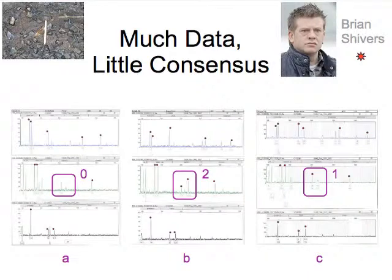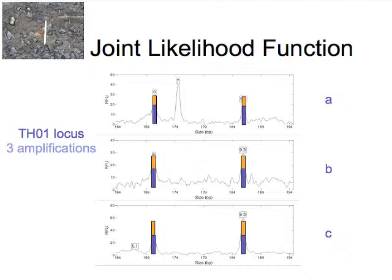About a year ago, Cybergenetics was asked to look at the data. This is a joint likelihood function — the computer is looking at three different amplifications, A, B, and C, from the THO1 locus. The computer tries out all possible combinations of different allele pairs. The blue bars move all over the place, the orange bars move all over the place, different heights, different amounts. This is one particular pattern that fits the data pretty well and explains what we're seeing. When it's all done at THO1, most of the probability did land on the allele pair 6, 9.3 at THO1.